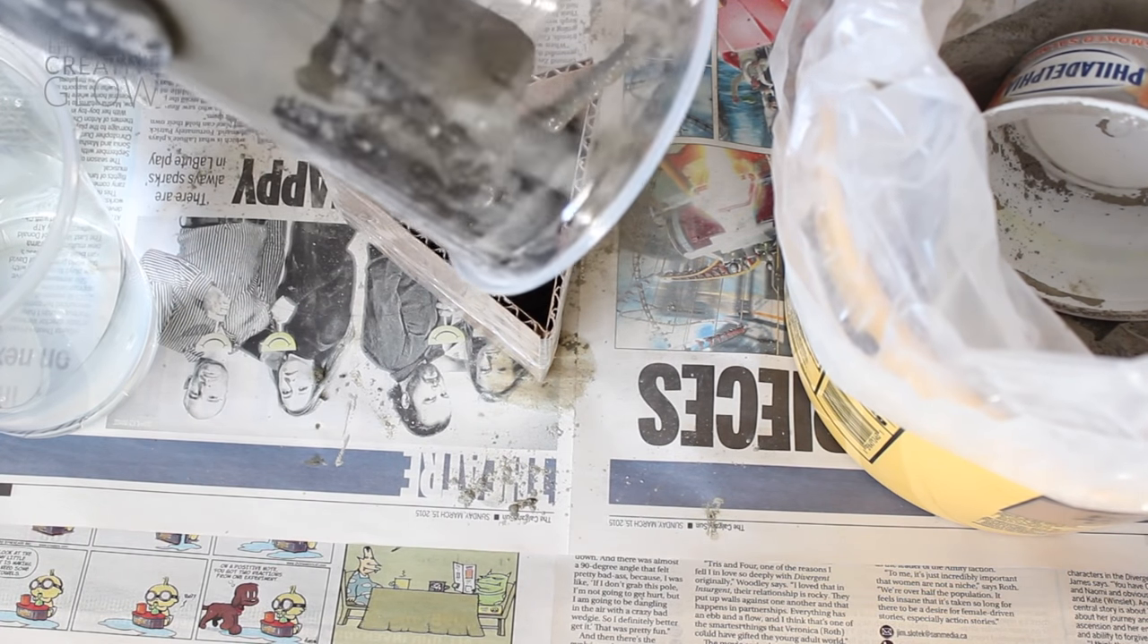Once your cement is mixed to the appropriate consistency you're ready to pour it into your forms. You don't want to fill the form all the way you want to pour it so that it sits about three quarters of an inch from the top of your form. Use your stirring stick to push the cement into all of the corners and let it sit for five minutes.